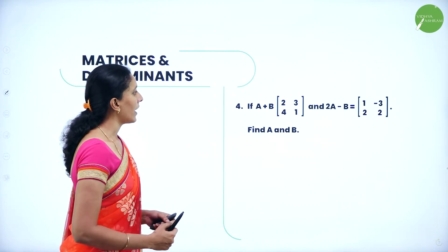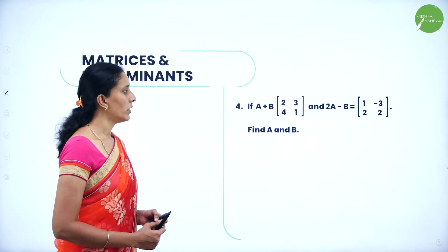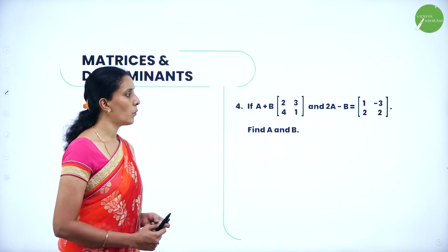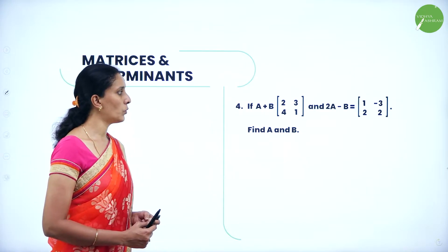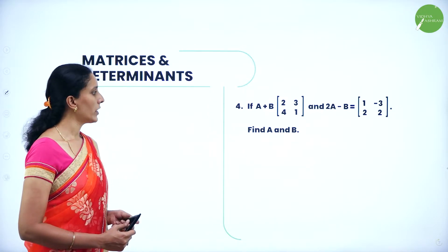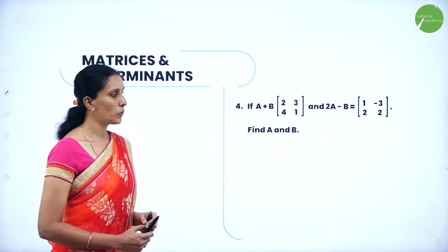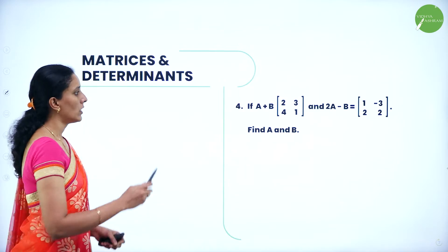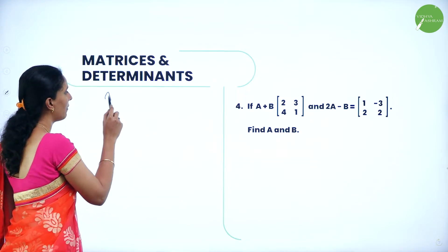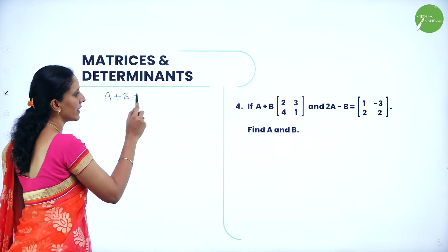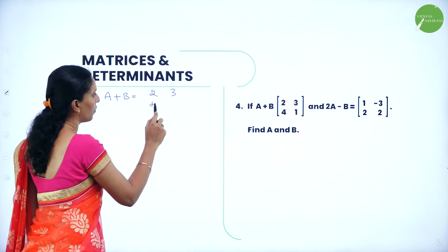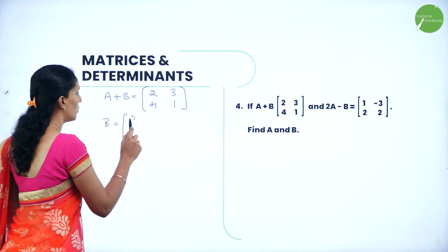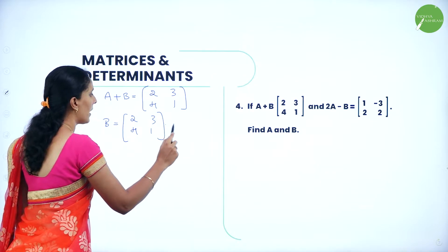Next question: if A + B = [2, 3; 4, 1] and 2A - B = [1, -3; 2, 2], find A and B. From the first equation, write B = [2, 3; 4, 1] minus A. Take this as equation 1. Substitute into the second equation: 2A - ([2, 3; 4, 1] - A) = [1, -3; 2, 2]. This gives 2A - [2, 3; 4, 1] + A = [1, -3; 2, 2].